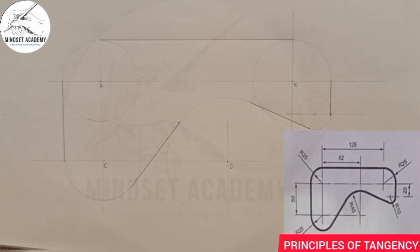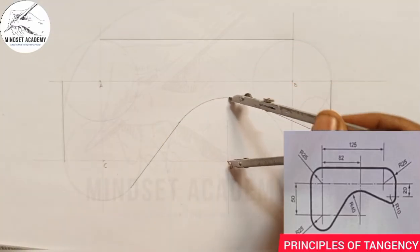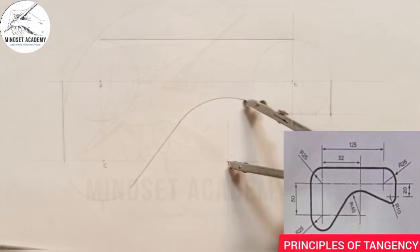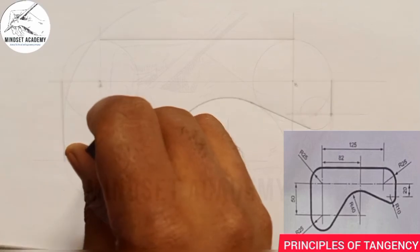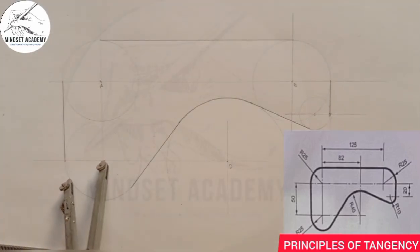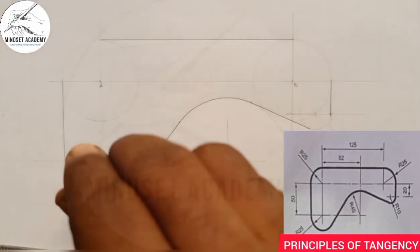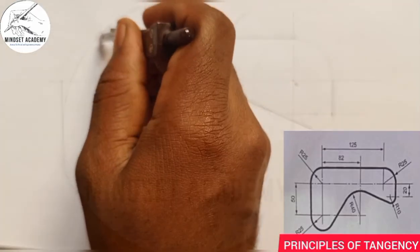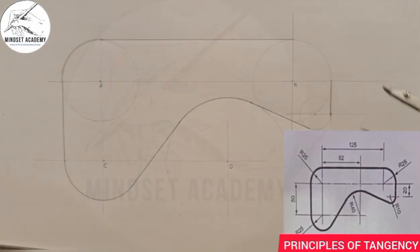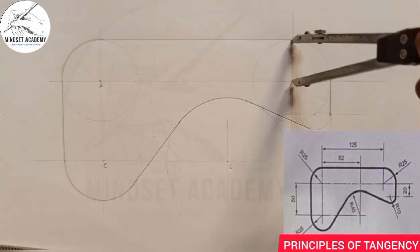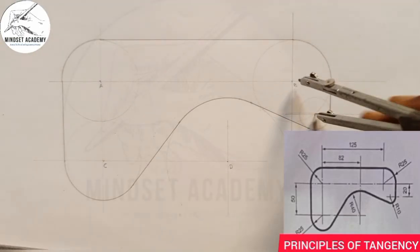At center D, where my arrow is pointing, I'll place it here and take it in. At C, where my arrow is pointing, I'll place it here and take it in. Then at A, I'll place it here and take it in. At B, I'll place it here and take it in. At point E, I'll place it here and take it in as well.